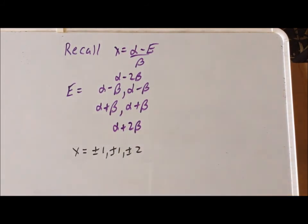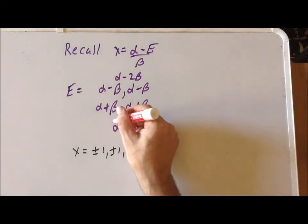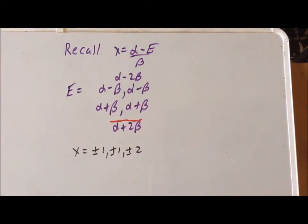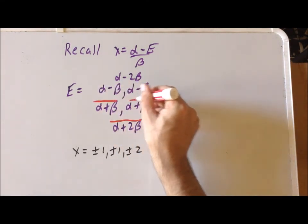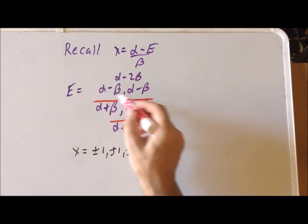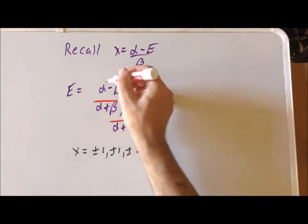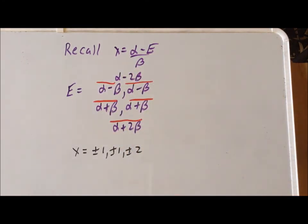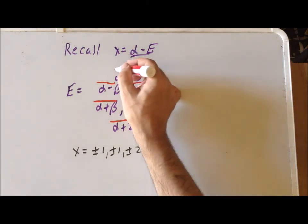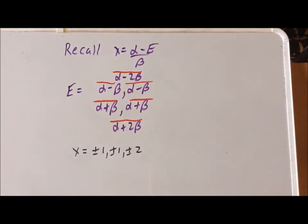So we get six energy levels. The ground state is going to be alpha plus 2 beta. We get a doubly degenerate state at alpha plus beta. We also have a doubly degenerate alpha minus beta. That's slightly higher in energy because recall that beta is negative. And then the high energy state is going to be alpha minus 2 beta.